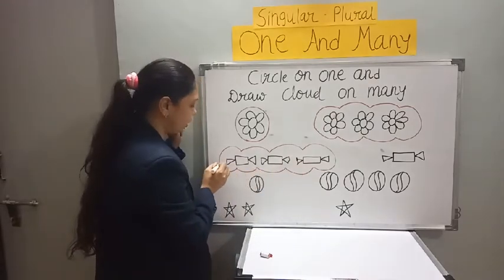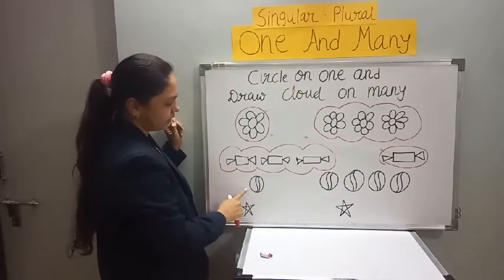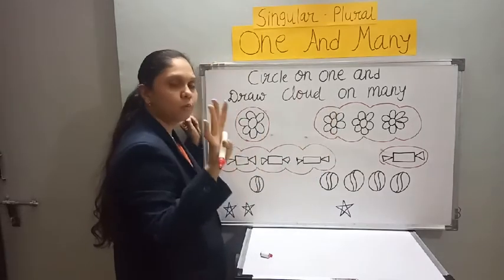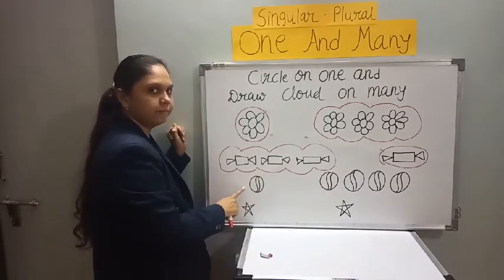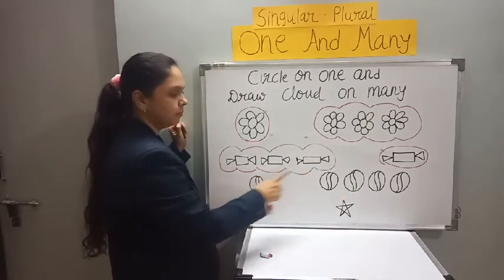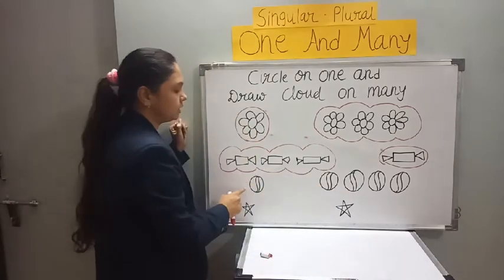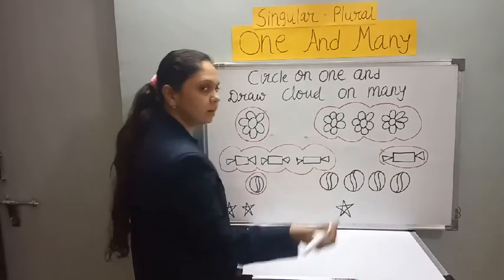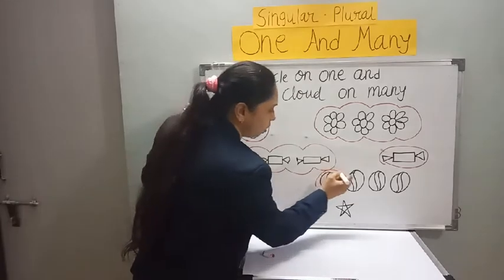Where there is one, draw a circle. Now here is one ball. And here — one, two, three, four — four balls. That means it's many. One is singular, many is plural. On singular, we draw a circle; on many objects, we draw a cloud.